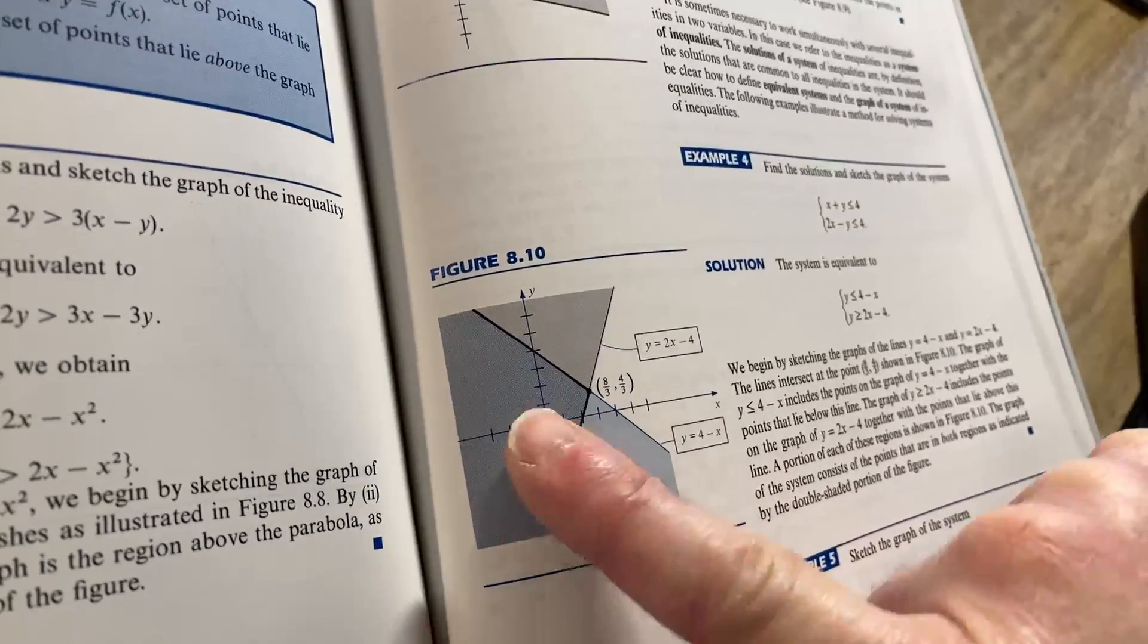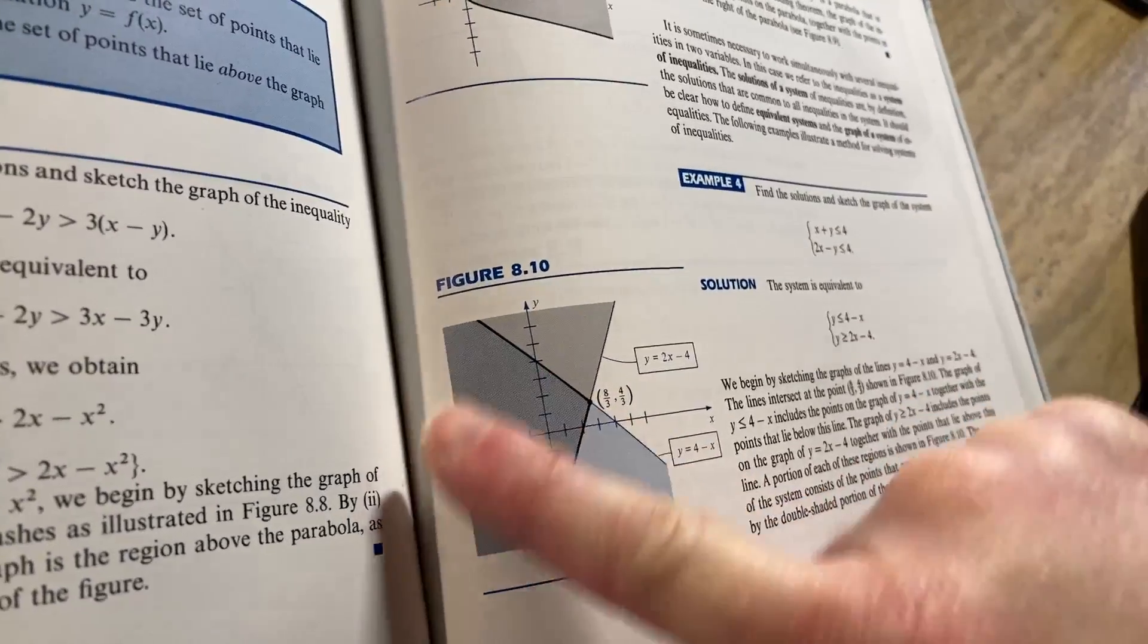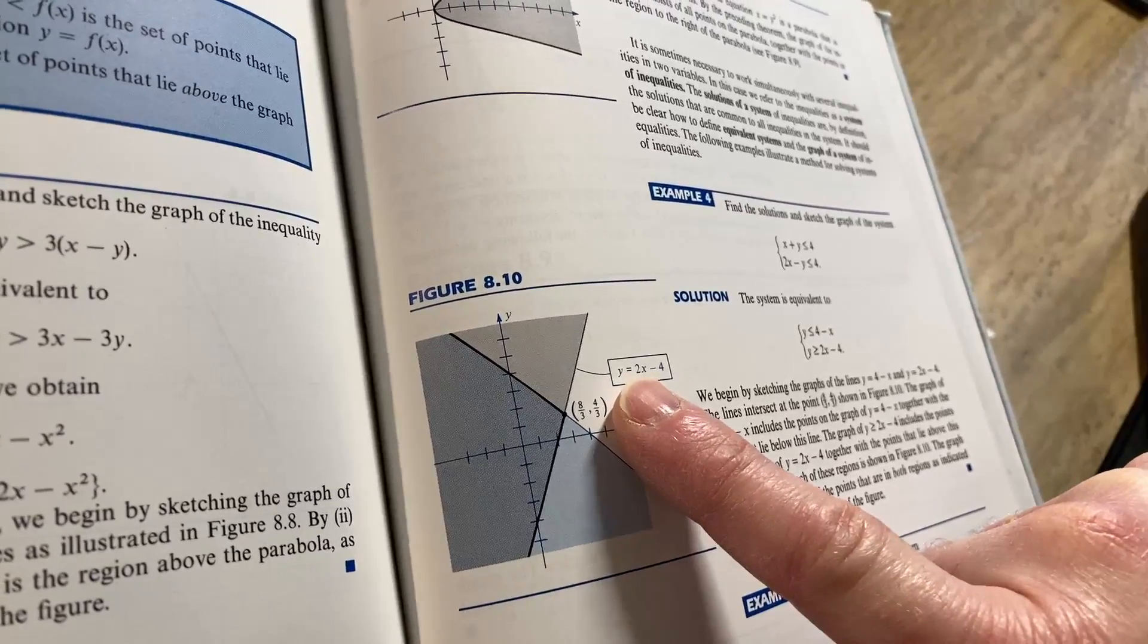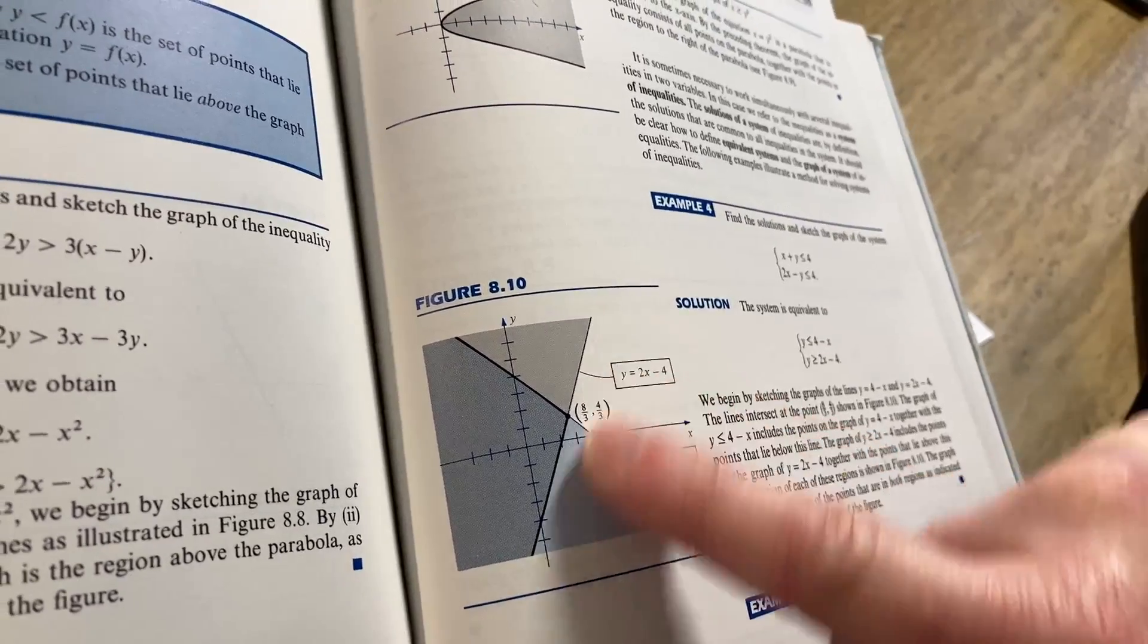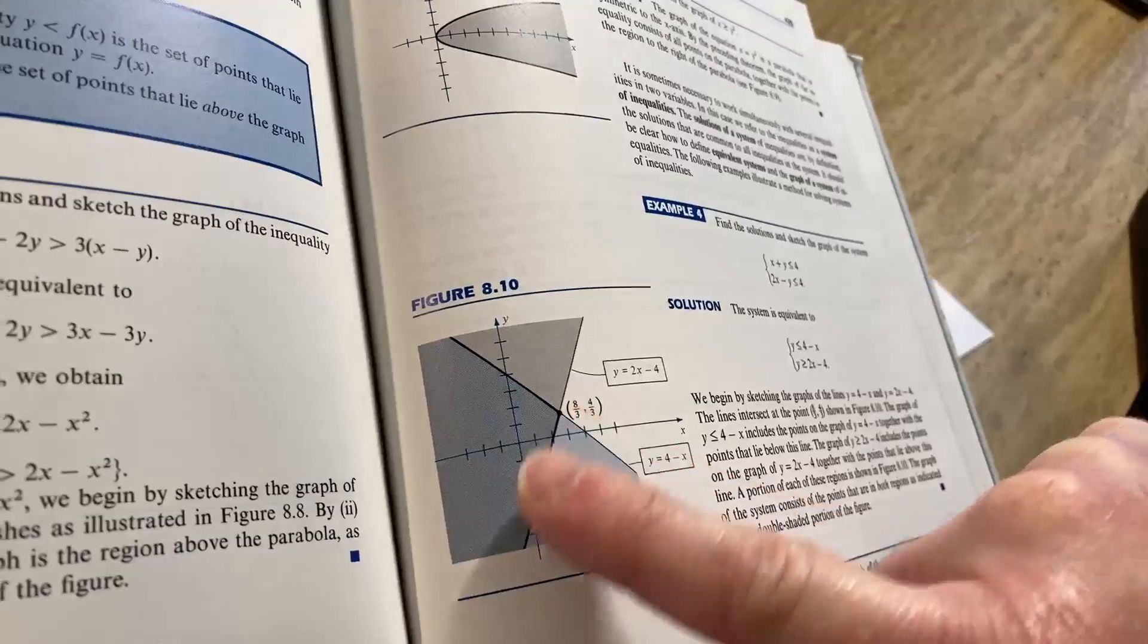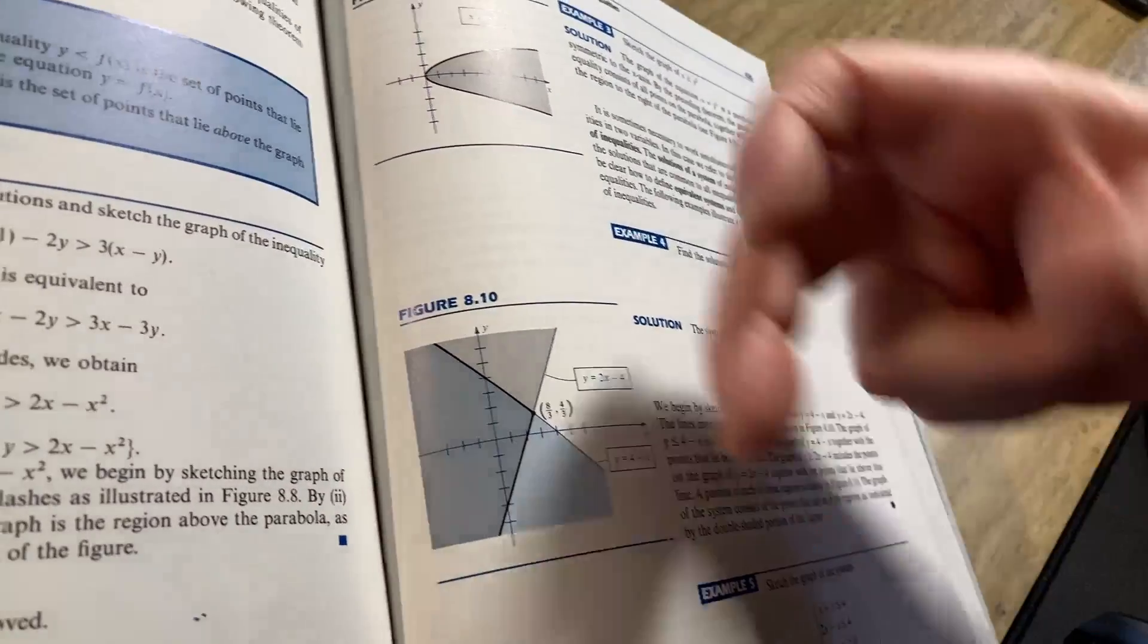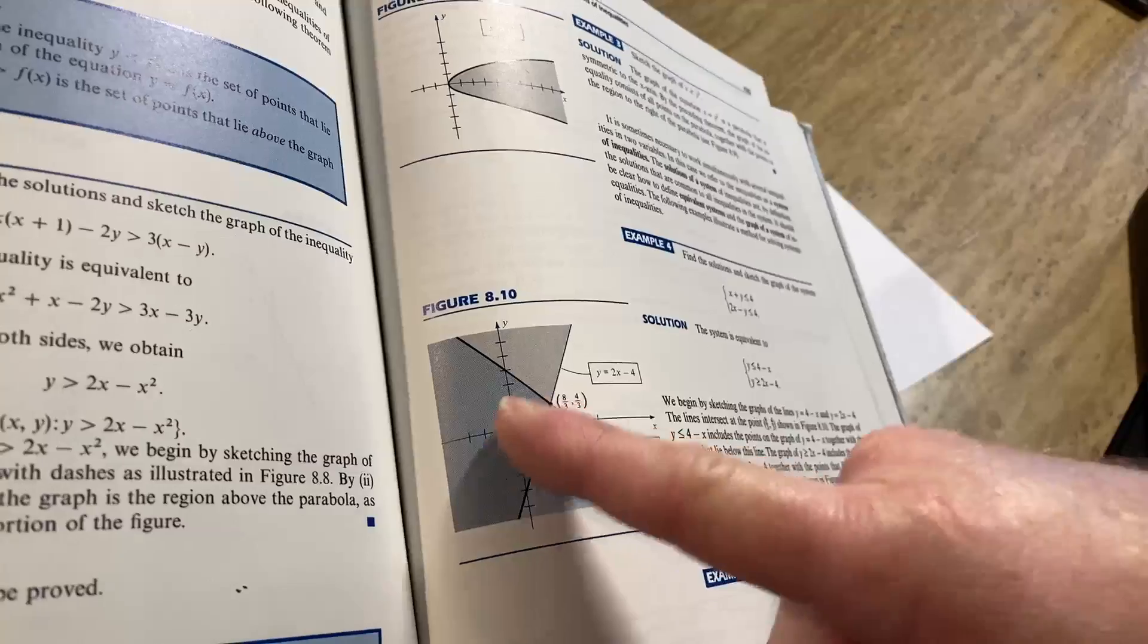So what I say below the line 4 minus x, so here's 4 minus x, so shading below it, this area here. And then here's 2x minus 4. All right, 2x minus 4 is this one. Okay, so you're shading above it, so it's over here. So below this one and above this one, so we're going to get this area here.